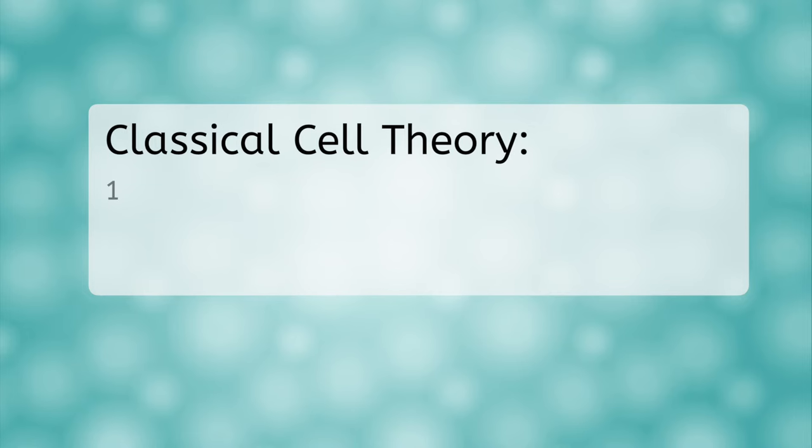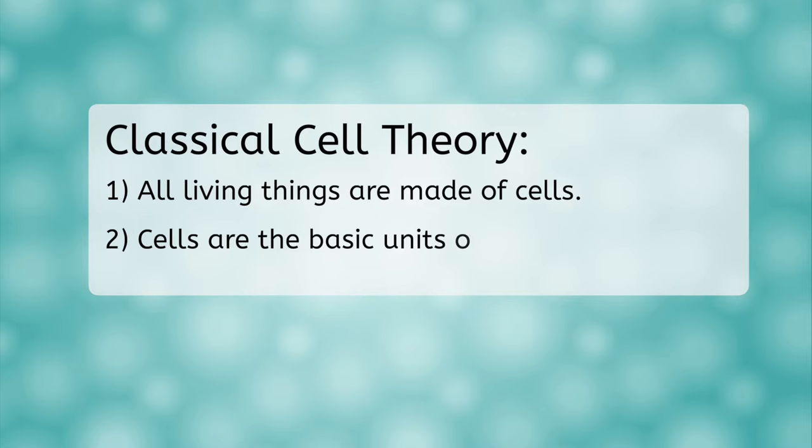This led to the establishment of the first two points in what is now known as classical cell theory. Number one, all living things are made of cells. And number two, cells are the basic units of life.